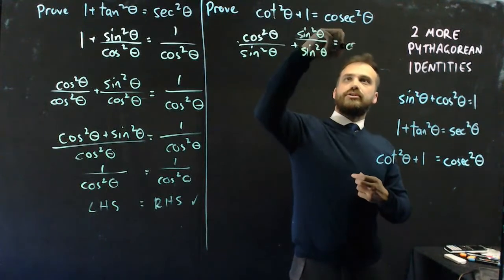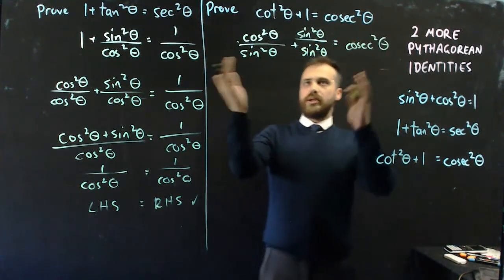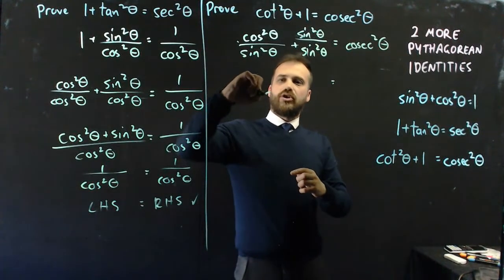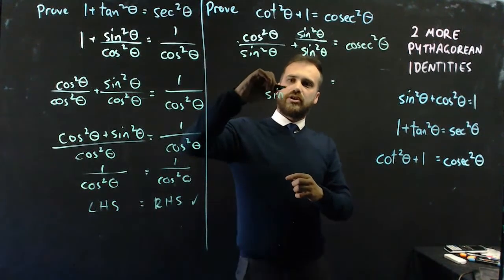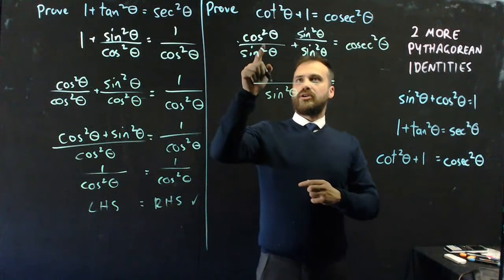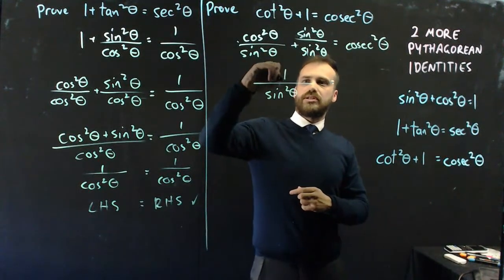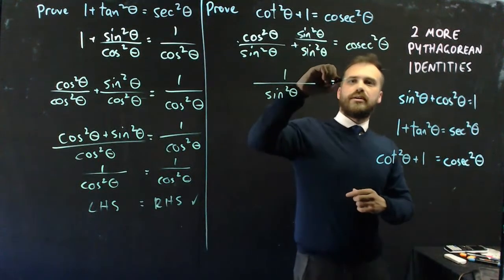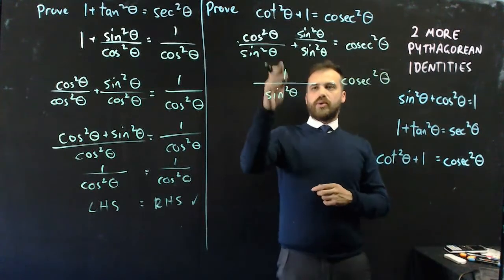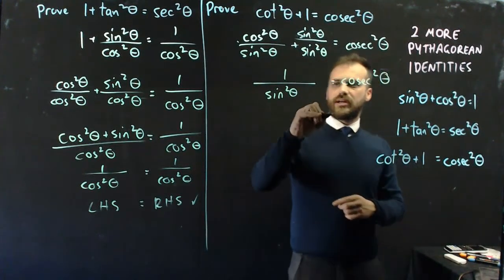I've got cosec squared theta here. When I group these together, I get a numerator of cos squared theta plus sine squared theta over sine squared theta, which equals 1 over sine squared theta, which is cosec squared theta. So 1 over sine squared theta equals cosec squared theta.